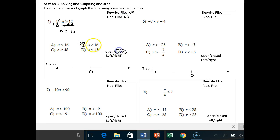I'm looking for a closed circle pointed to the right. So I go to 16 here, put a closed circle, and I graph it to the right.